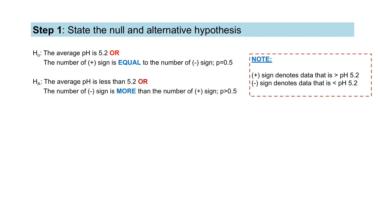The alternative hypothesis can be written as: the average pH is less than 5.2, as stated in the problem. In other words, the number of negative signs is more than the number of positive signs, which also indicates that the probability of a negative sign should be more than 0.5. This alternative hypothesis also implies that this problem should be solved using a one-tailed test.